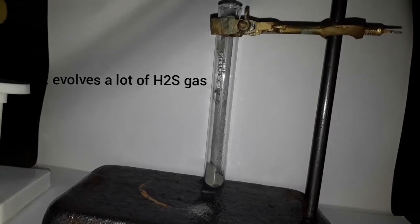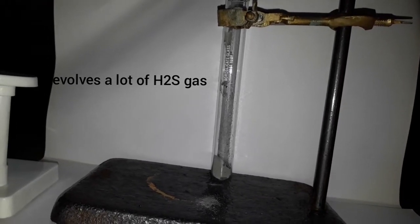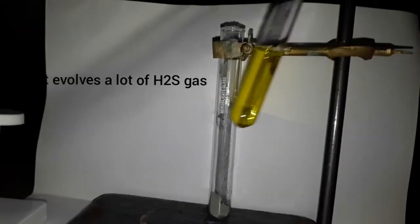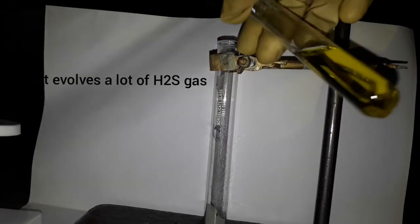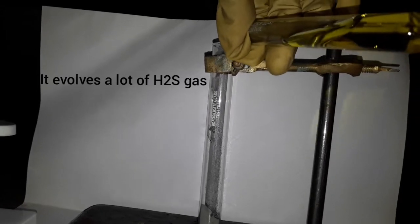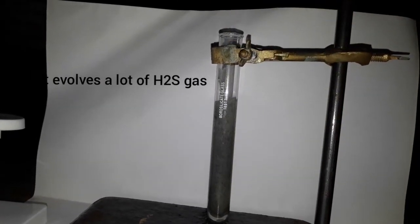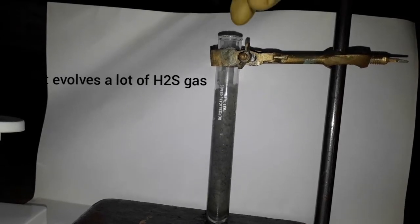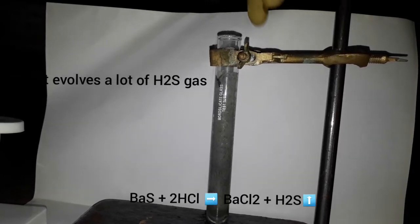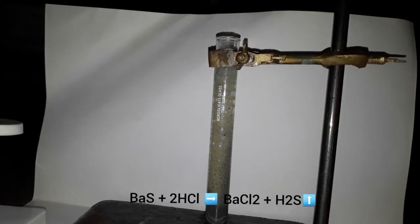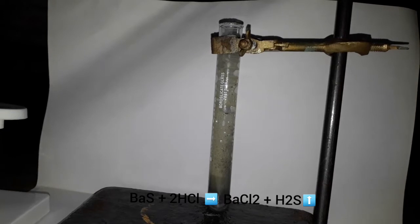Now we have hydrochloric acid. When poured, this produces a lot of hydrogen sulfide gas and barium chloride. Both are toxic, and hydrogen sulfide has the smell of rotten eggs.